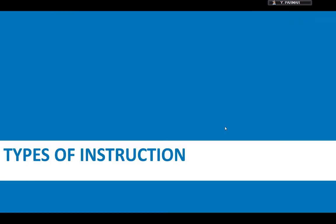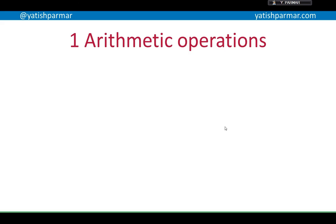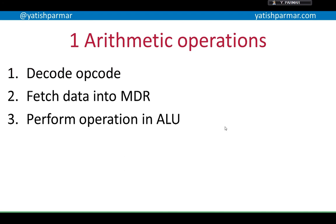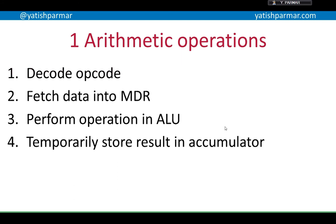Now, there are different types of instruction — three that you need to think about. The first one is an arithmetic operation. If you think about the fetch, decode, execute cycle: the instruction comes in, the opcode is decoded, the data is fetched into the memory data register from the primary memory, the operation is performed in the arithmetic and logic unit, and then the result is temporarily stored in the accumulator. Then another instruction will come along and tell the CPU what to do with that data in the accumulator — go put it in another register, go store it at this address in the RAM, etc.